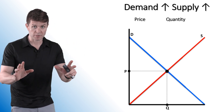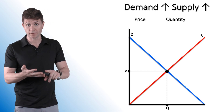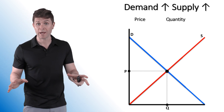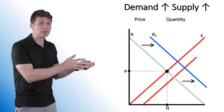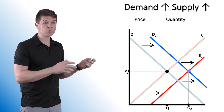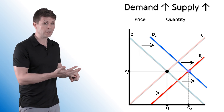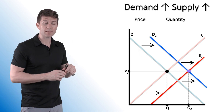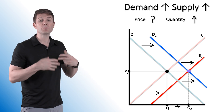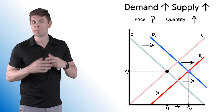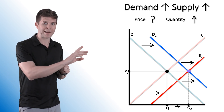Now on to the double shifts. With double shifts, the only thing that's really different is that we are going to know what happens to one variable — either price or quantity — and we're not going to know what happens to the other. We're going to see an increase in demand and an increase in supply. Due to this we will have a new equilibrium at a higher quantity, Q2, but price in this particular example looks like it stayed exactly the same. Quantity definitely went up, but price is going to be what we call indeterminate — ambiguous, unknown. Whenever we have a double shift, we know what happens to one variable but not the other.